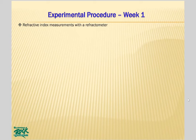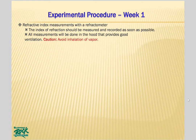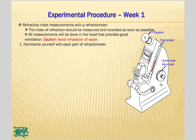Once all samples are collected, bring them to the hood where a refractometer is installed. Measure and record the refractive index as soon as possible because the samples may decompose on standing. All measurements should be done in the hood for good ventilation. Hold your breath while reading the scale through the eyepiece to avoid inhaling vapor. Familiarize yourself with each part of the refractometer: eyepiece, thermometer, coarse scale adjust knob, fine scale adjust knob, press-and-hold-to-read-scale button, movable light source, lower prism, and upper prism.